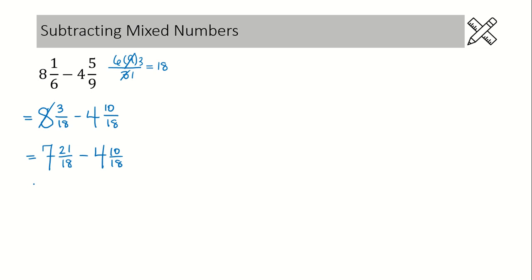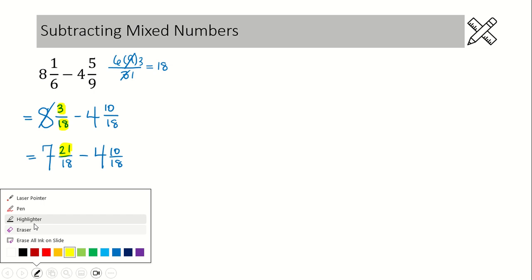But I'm going to show you a little shortcut — I'll grab my highlighter here. To get your numerator on this step, what you do is add the numerator and the denominator from the step above: 3 plus 18 is 21. So that's a nice little shortcut to use to help you out.